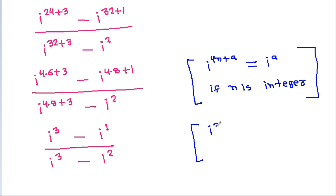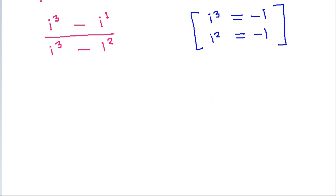And iota power 3 is equal to minus iota, and iota power 2 is equal to minus 1. So iota power 3 is minus iota, minus iota power 1 which is iota, divided by iota power 3 which is minus iota.